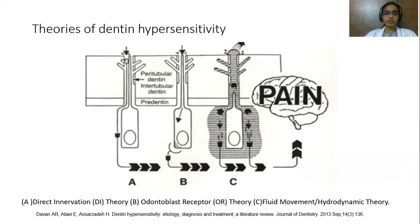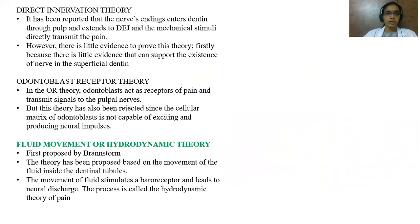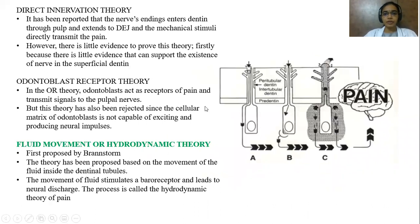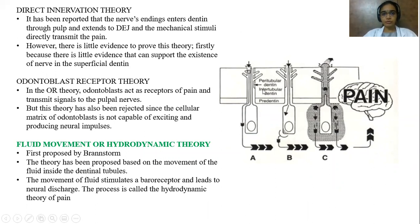Coming to the theories of dentin hypersensitivity, there are three theories: direct innervation theory, odontoblast receptor theory, and the most popular and commonly accepted theory — the fluid movement or hydrodynamic theory. In the direct innervation theory, it has been reported that nerve endings enter the dentin through the pulp and extend to the DEJ, and mechanical stimuli directly transmit the pain. However, there is little evidence to support the existence of nerves in the superficial dentin.